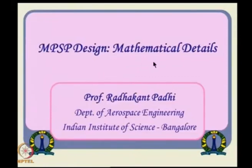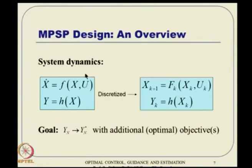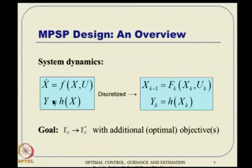Let us get on with the mathematical details. The very first thing, as mentioned, is that it is inspired from discrete system dynamics. We have a system dynamics in a completely nonlinear form, and there is an output which is also a nonlinear function of x. This output I am talking about is actually the desirable output — it is not the sensor output. Both are nonlinear; discretization is typically done through Euler integration.